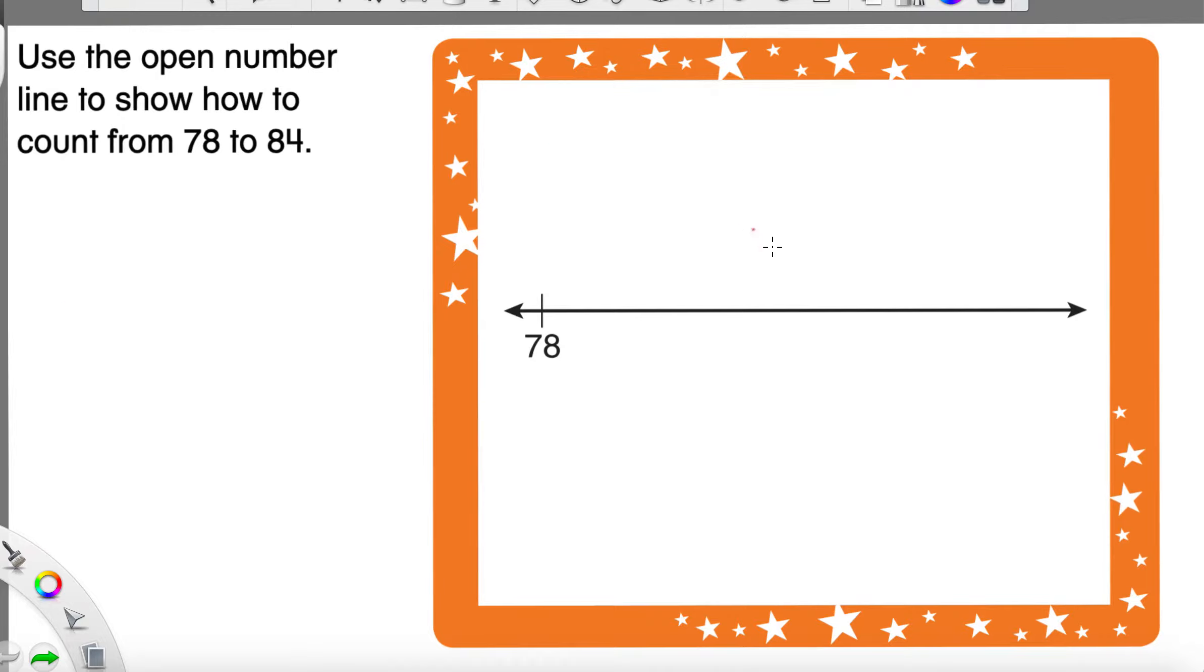We could do this. We could absolutely do this. So what we do is we're just going to start numbering the number line. After 78, we have 79. Then we have 80 after that. And from here, you can just kind of count on.